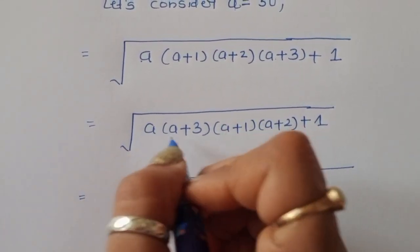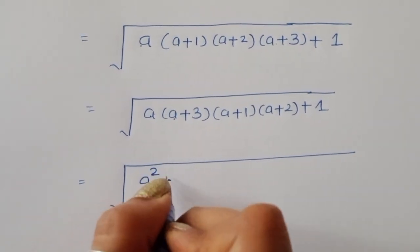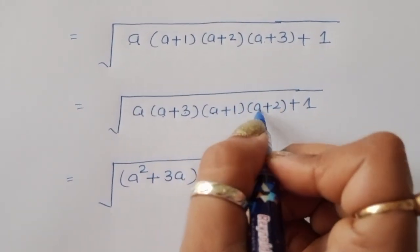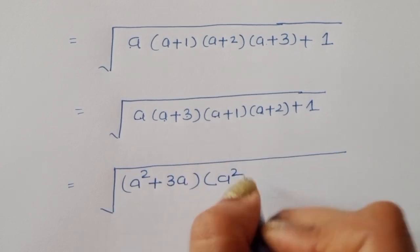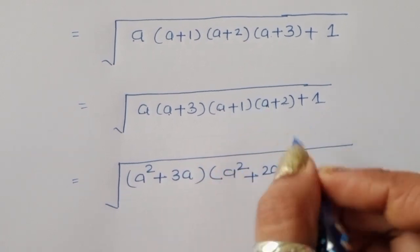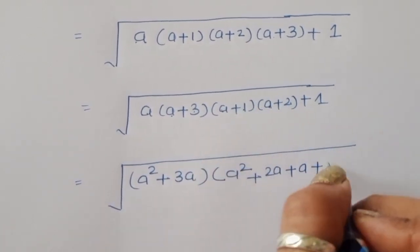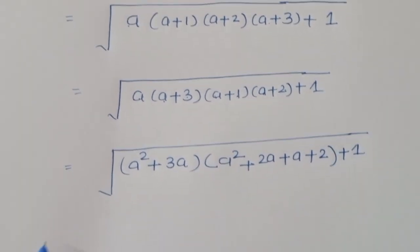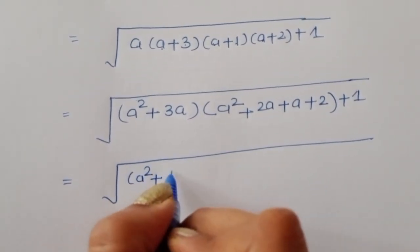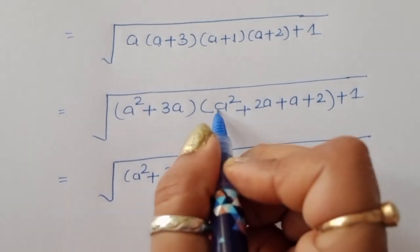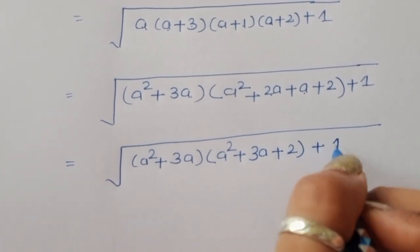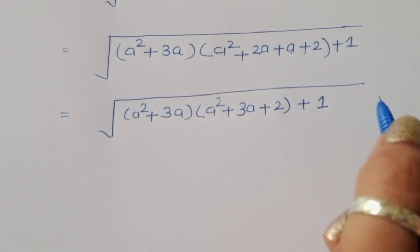We multiply out: a times (a+3) gives a squared plus 3a. Then (a+1) times (a+2) gives a squared plus 3a plus 2. So the expression inside the square root becomes (a² + 3a) times (a² + 3a + 2) plus 1.